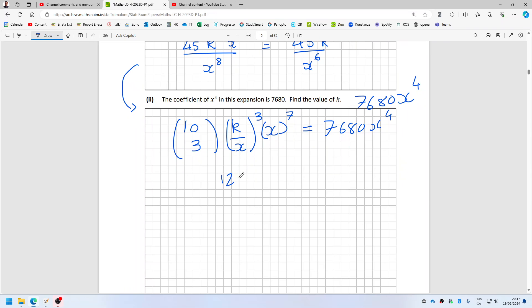So that's 120 k cubed equals 7680. Oh, 7680 divided by 120 is 64.